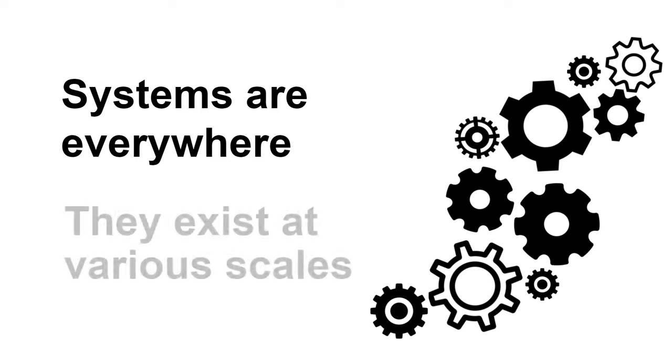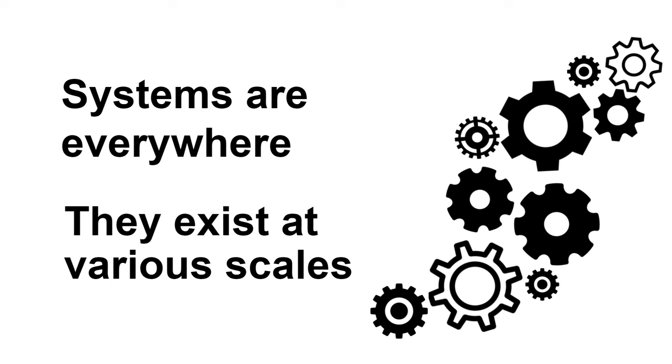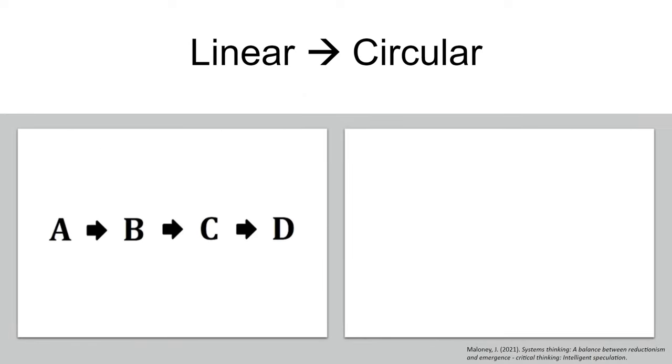Systems have inputs and outputs. In linear thinking, we can easily see that input A affects B, which affects C, which affects D, and D is that final output. Since we can more easily process this and identify the cause and effect or causal relationship, we are more prone to be linear thinkers.